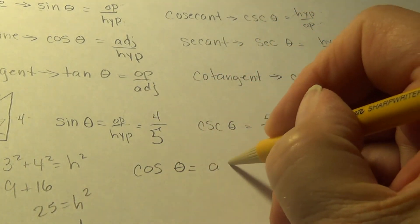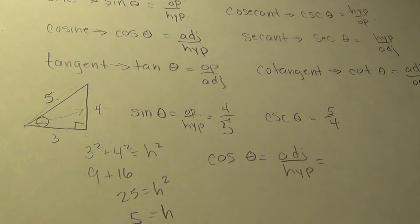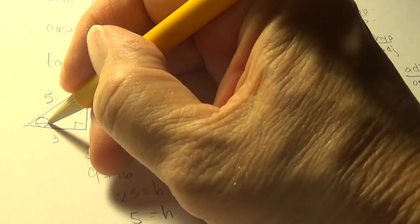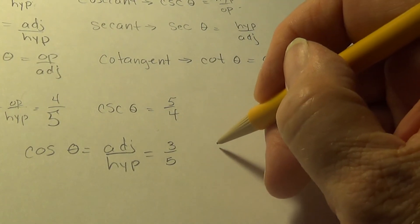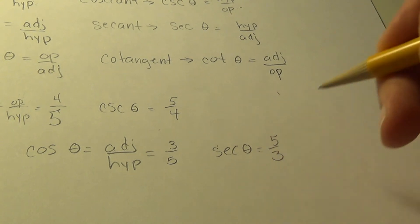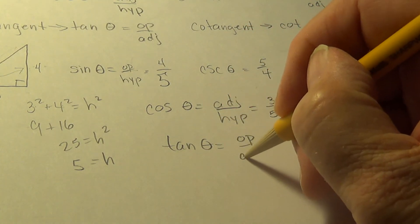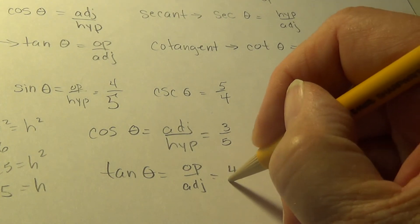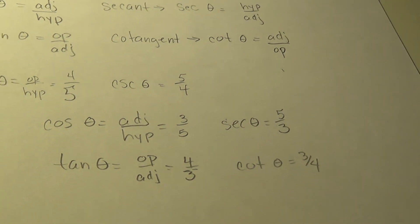Cosine of the angle is adjacent over hypotenuse. See if you can write that in before I do. It's going to be side adjacent, which is three, over hypotenuse of five. Then the flip of that is secant of theta, which is going to be five over three. The last two are tangent of theta, which is opposite over adjacent. In our example, side opposite is four, adjacent is three. Four-thirds. And cotangent of the angle is going to be the flip of that, three over four.